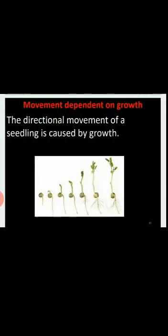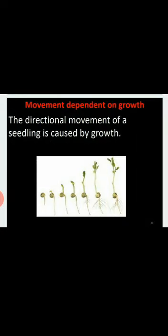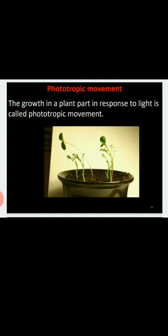Another example of growth-dependent movement in plants is seed germination. When a seed germinates, the root goes down and the shoot goes up. This directional movement of shoot and root is caused by growth. These directional movements of plants in response to some stimulus are called tropic movements.